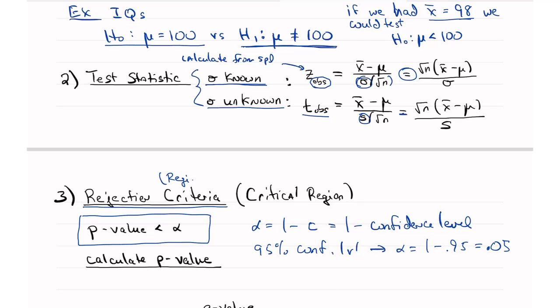So the p-value would have to be less than 0.05 for us to reject the null. So it's called a rejection region, or rejection criteria, or critical region. Those are three ways of saying the same thing. I like rejection criteria, because then that tells you that if this is true, we reject the null hypothesis.